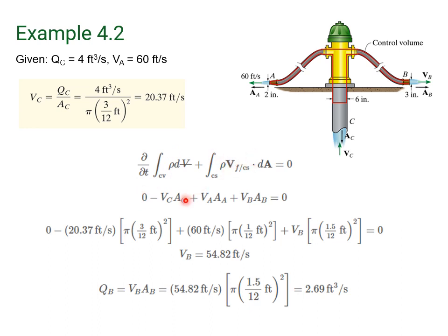The second term — we just have to keep track of the Q terms. This first term, remember, it's V dot A, so it's going to be negative, and the other terms are going to be positive. We can now solve this because we know the velocity at C, the area at C, the area at A, and the area at B. The V_C · A_C term, the V_A · A_A term, and the V_B · A_B term — remember, we have to use the radii here, not the diameter. We calculate the velocity at B as 54.84 feet per second. And if we want to find the volume flow rate, it's V times the area at B, so we get 2.69 cubic feet per second.